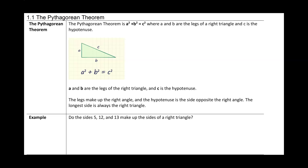Our first section, Section 1.1, is the Pythagorean theorem. The Pythagorean theorem applies to any right triangle. The sum of the squares of the two sides equals the square of the hypotenuse — in other words, a squared plus b squared equals c squared. A and b are the legs of the triangle and c is the hypotenuse. Now, how do we know which are the legs? Look at the right angle.